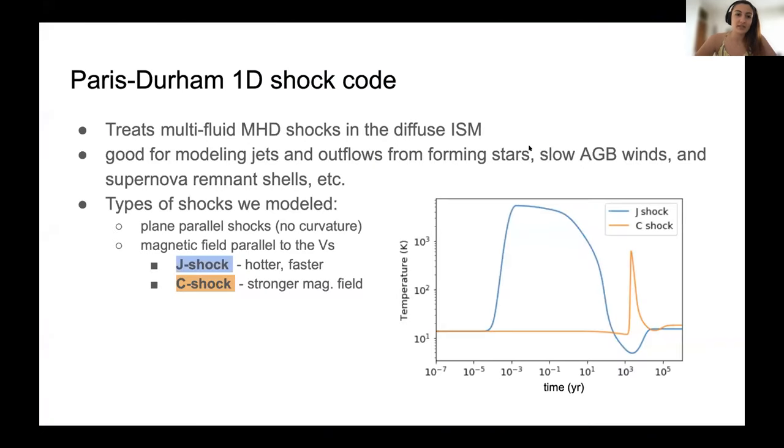During the last two weeks, Tram and Sylvie taught us a lot about Paris-Durham one-dimensional shock code, which is a code that treats multifluid MHD shocks in the diffuse ISM. It's good for modeling jets and outflows from forming stars, slow AGB winds, and supernova remnant shells, and many other things.